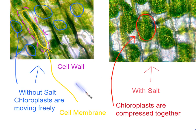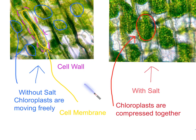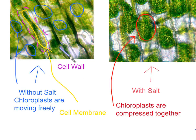Here we have the cell wall — in purple, we have the cell wall. In yellow, we have the cell membrane, which basically holds everything in the cell and is the basic structure of the cell. We can see that without the salt, the chloroplasts are moving freely and not bunched up. In contrast, here they are all bunched up and the chloroplasts are compressed together.